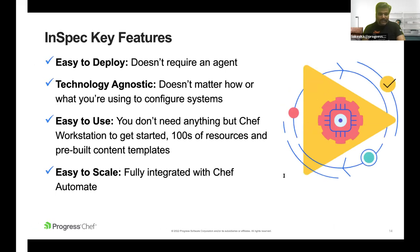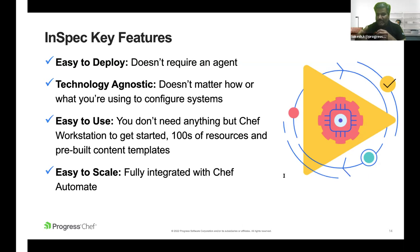InSpec key features: it is agentless — you don't need to install InSpec on the target machine; it uses SSH or WinRM to carry out testing. It is technology and platform agnostic, supporting multiple platforms like Windows, Linux, Docker, and multiple cloud products like AWS and Azure. It is incredibly flexible — it offers numerous resources out of the box and it's easy to create custom resources. Writing code requires only basic Ruby skills and a Chef Workstation. For scalability, it can target thousands of nodes by seamlessly integrating with the Automate reporting tool.